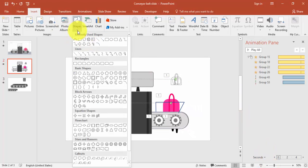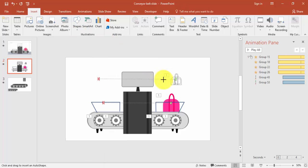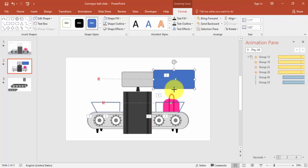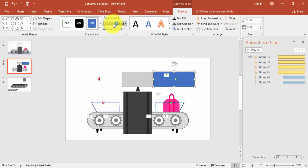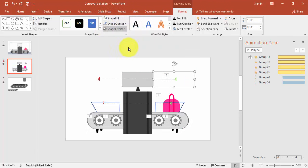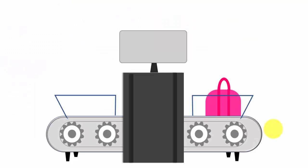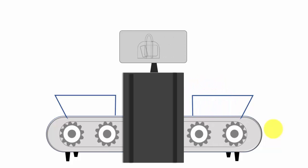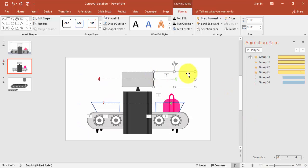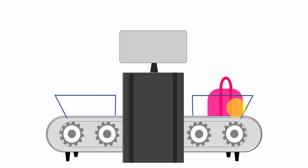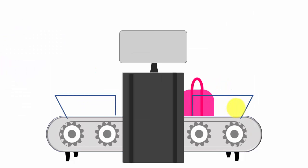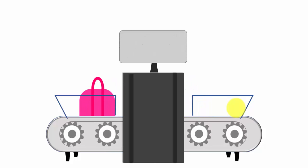The bag is visible outside the machine which doesn't look good, so I'll do a simple trick: add a white rectangle shape on top with no outline and white fill to hide it. Copy and paste it on the other side as well. Now when we play, the bag appears to go inside and content shows on screen perfectly.